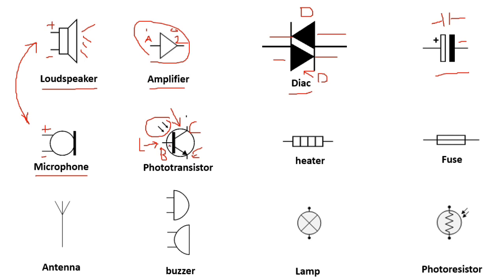If the phototransistor receives light at its base, the current flow will happen. The difference between a phototransistor and a normal transistor is at the base: a normal transistor gets a voltage at its base, but a phototransistor gets light at its base. So for a normal transistor, voltage is the operating signal, but for the phototransistor, light is the operating signal.